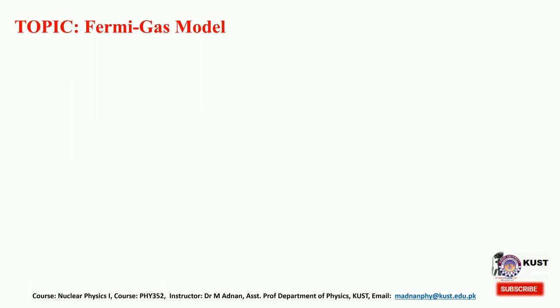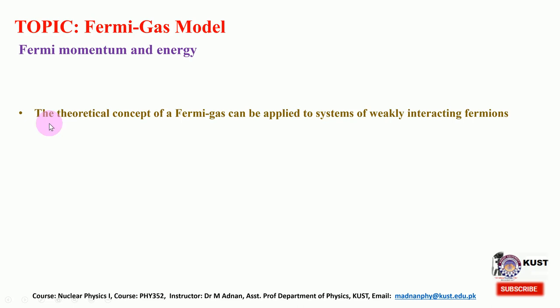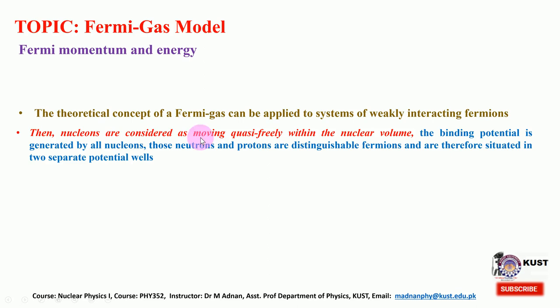We will be interested in the magnitude of the energies. The description of the Fermi momentum and energy in Fermi-Dirac statistics are already known to you, but we will summarize them. The theoretical concept of the Fermi gas can be applied to a system of weakly interacting fermions — we are assuming the nucleons to be weakly interacting fermions, since both proton and neutron are fermions. Thus, nucleons are considered as moving quasi-freely within the nuclear volume, so that the binding potential is generated by all the nucleons.